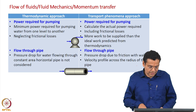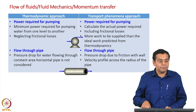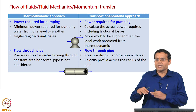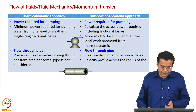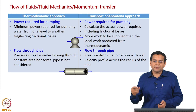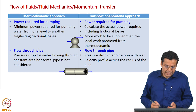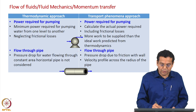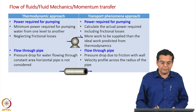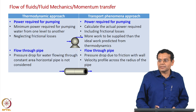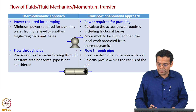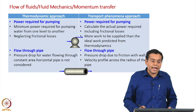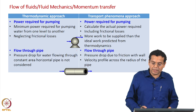The first example is the power required for pumping. Suppose we have water to be pumped from one level to another using a pump — a household example of pumping water from a sump to an overhead tank. If you use a thermodynamic approach, it gives you the minimum power required to pump water from one level to another, because it neglects frictional losses.